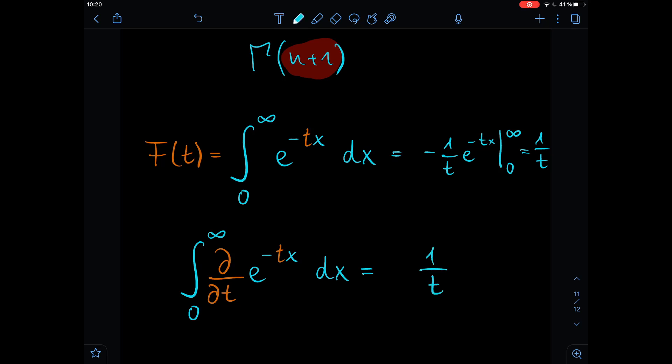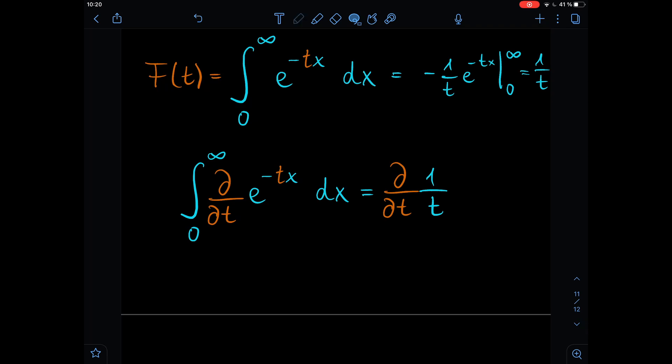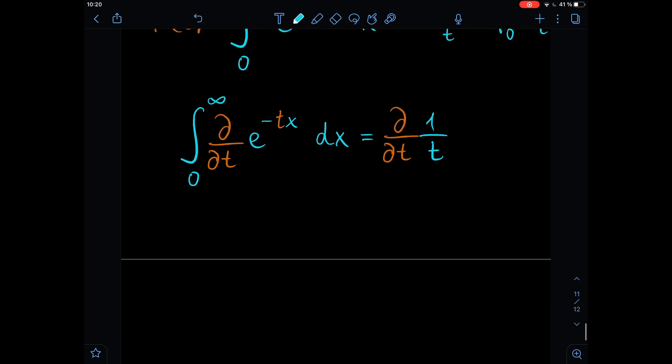So here we have 1 over t, and we just take this derivative here and put it here. Alright, so what we have to do now is we need to take the derivative with respect to t, and now we're treating x as a constant.